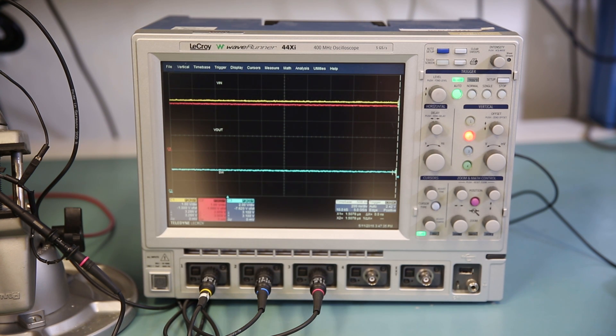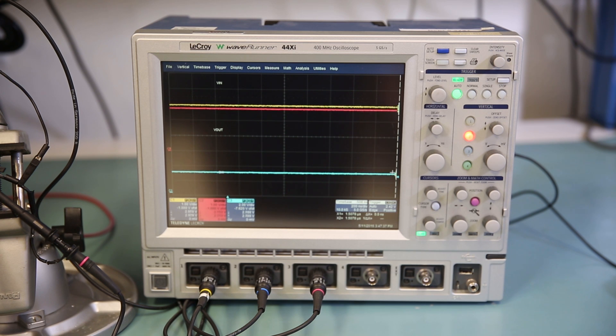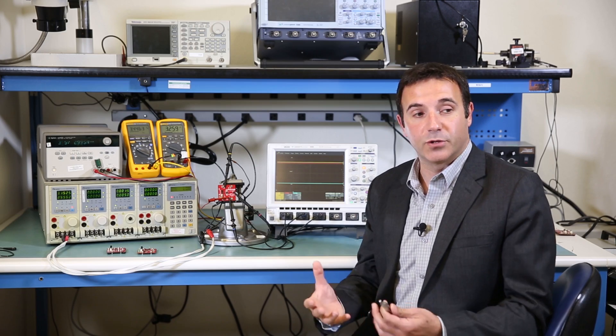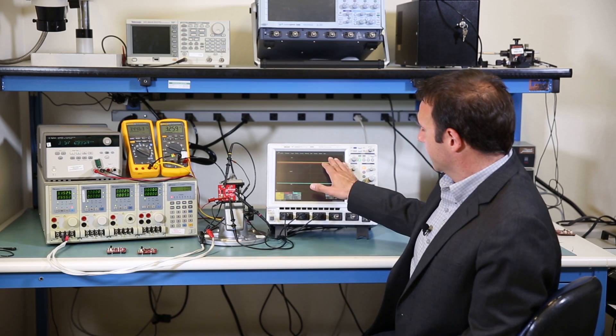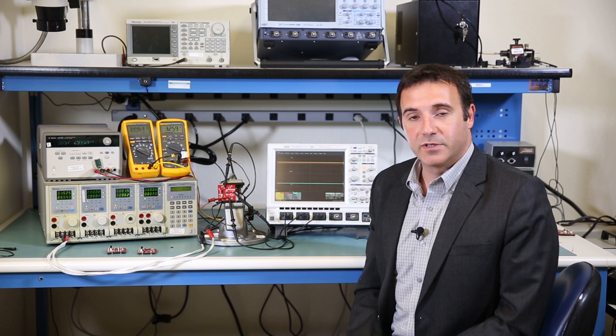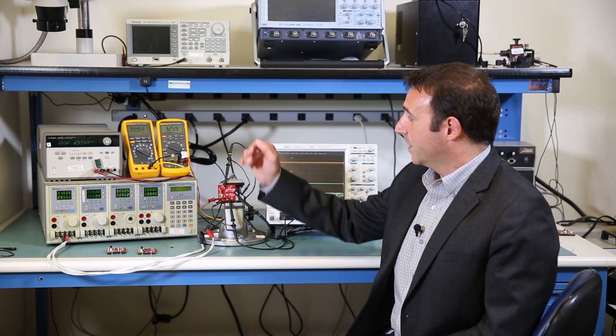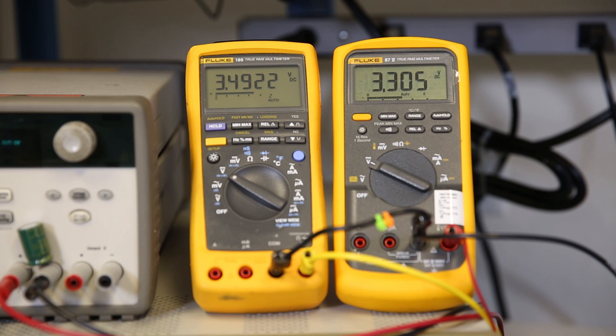One thing that we can observe is that at a certain point, my switching node has stopped switching, essentially turning on the top FET constantly. And the difference between the input and the output voltage remains constant at about 200 millivolts in this case.